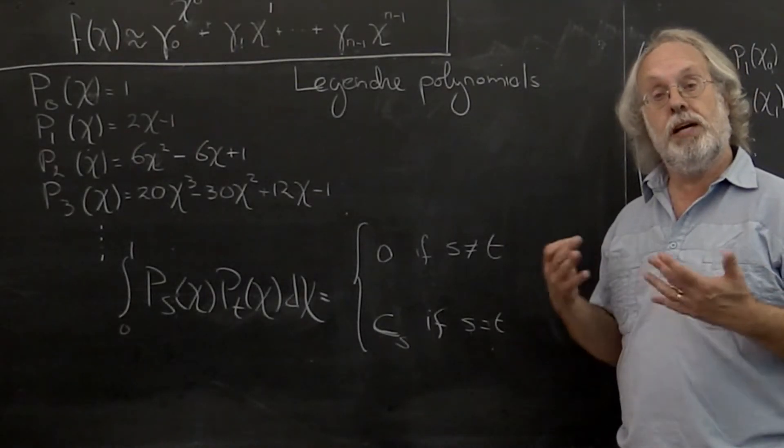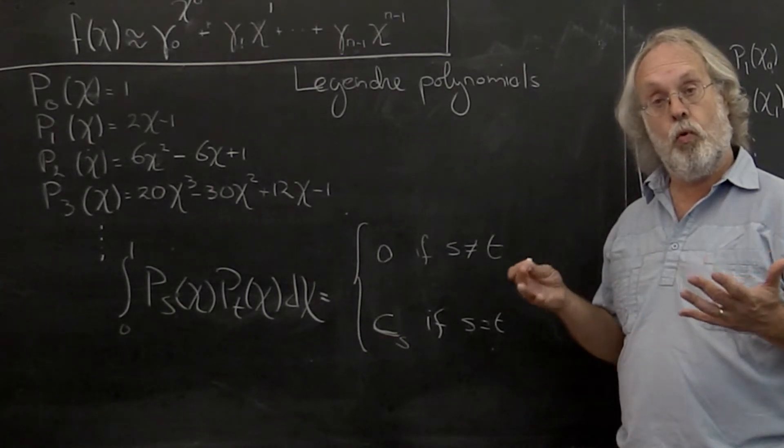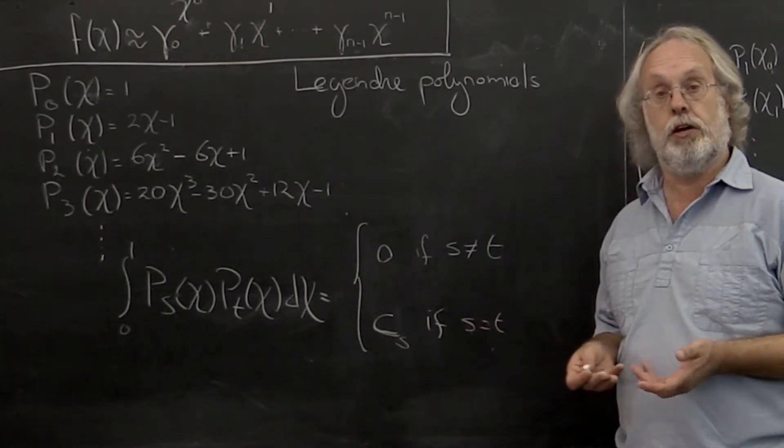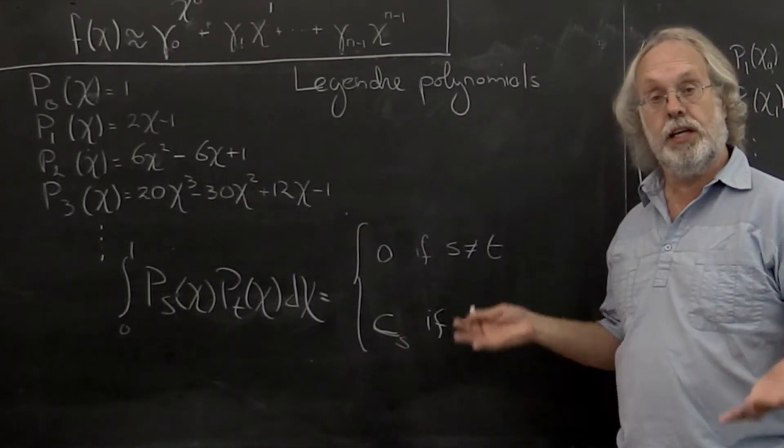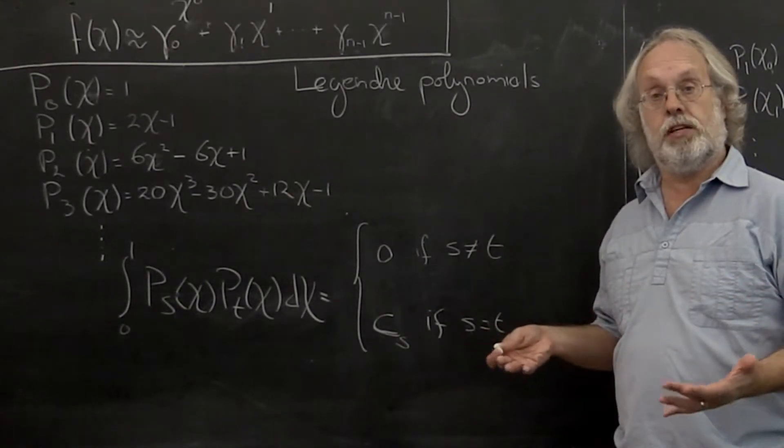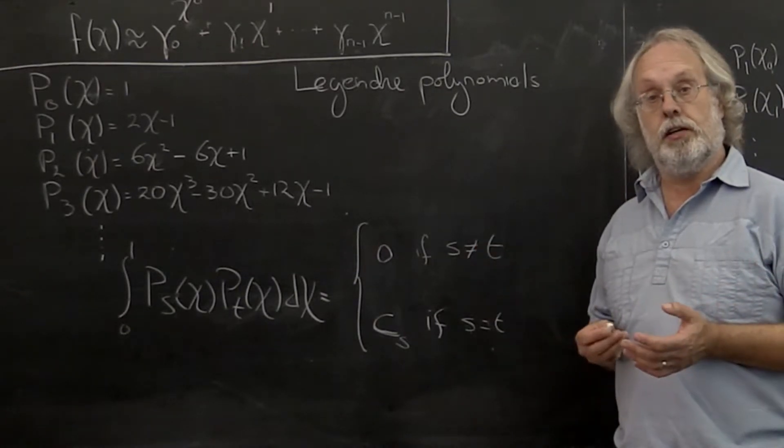What you notice is that this matrix ends up with a very poor condition number, a very large condition number as n gets very large. And what that means is that eventually the columns of this matrix become approximately linearly dependent.